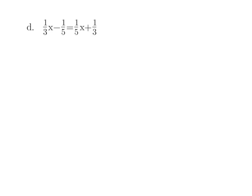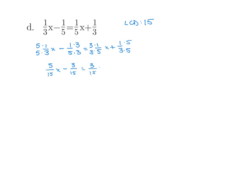Let's try D. We'll start off with our LCD. The smallest number divisible by 3, 5, and 3 is 15. The first fraction we're going to multiply by 5 on top and bottom. The second fraction we multiply by 3. For 1 fifth x, we want to multiply by 3. And for 1 third, we want to multiply by 5. So we get 5 over 15 times x, minus 3 over 15, equals 3 over 15 times x, plus 5 over 15.